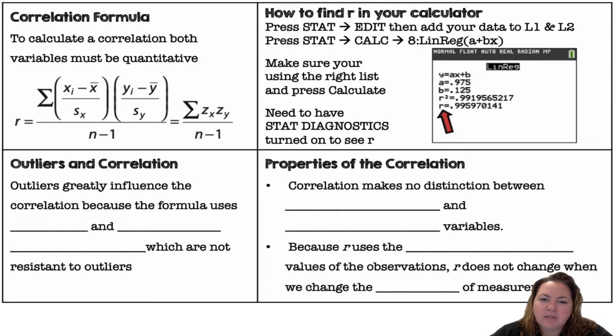We use n minus 1 as a degrees of freedom, kind of a buffer. You're not going to be expected to really use that formula. Your calculator does all of the calculations for you, but it is good to know that it's coming from the z-scores. You have to have two quantitative variables because it's using x z-scores and y z-scores.